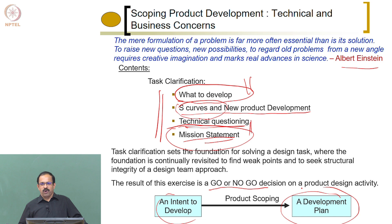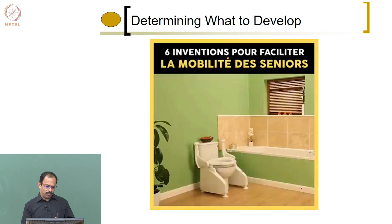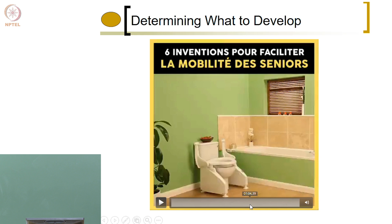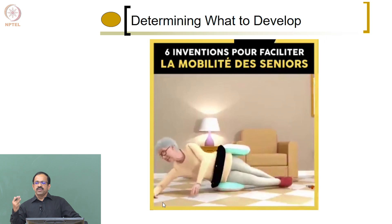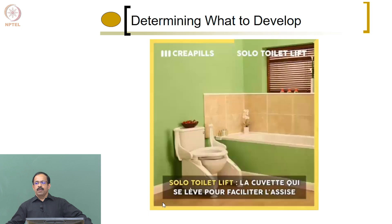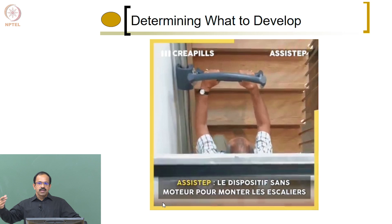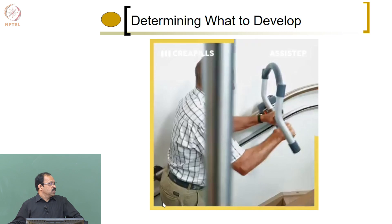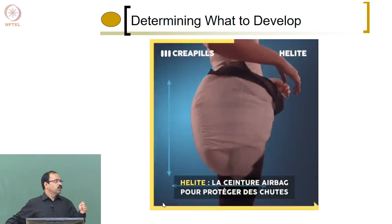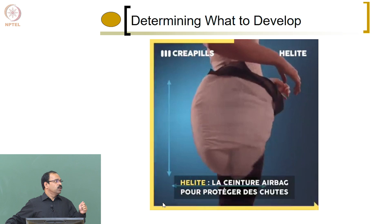Let us see how people start developing new products. You might have seen many products coming into the market. Let us see some of these products — what they call the most important inventions. In day-to-day life you will see a lot of need for new products, and how people convert this into products in the markets. This is an elderly assist system — people who are very old have difficulty sitting and getting up, and there are not many products available. These are some products people have developed by looking at the requirements of the customer, identifying the needs, and developing products.